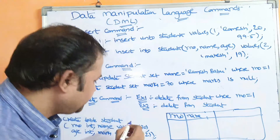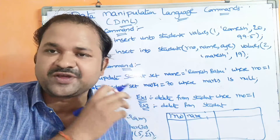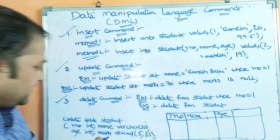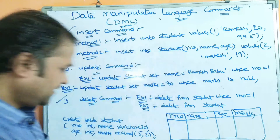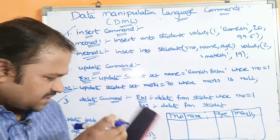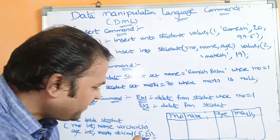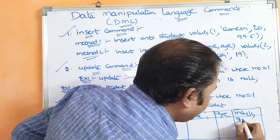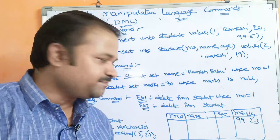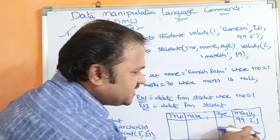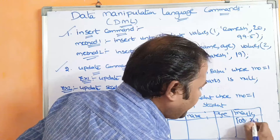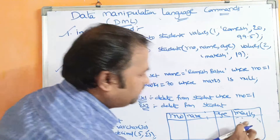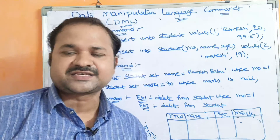Suppose if we enter only three characters such as 'RAM', then only three characters of memory will be allocated. The next column is age, which is of type integer. And the last one is marks, which is of type decimal. Decimal means we provide two values: the first value specifies the total number of digits, and the second value specifies how many decimal points it can accept after the dot. For example, marks could be 99.23 — five total digits, two after the decimal point. So first we create the table, then a structure will be created and we can perform the operations.